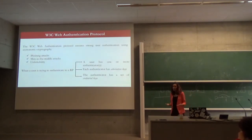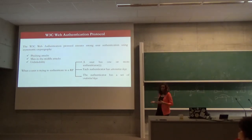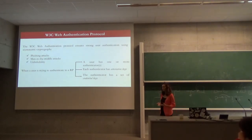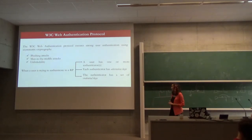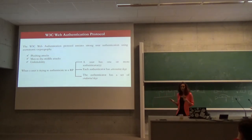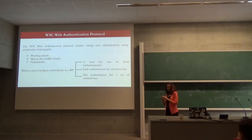So what is this protocol? It's a protocol that ensures strong user authentication with asymmetric cryptography. It prevents phishing attacks, man-in-the-middle attacks, and linkability between users. Basically, each user has one authenticator — it can be a YubiKey device — and can have more. Each authenticator has an attestation key which proves that it's an actual user with an actual device. And whenever the user is trying to connect to a server, the authenticator generates a different pair of keys for each server.